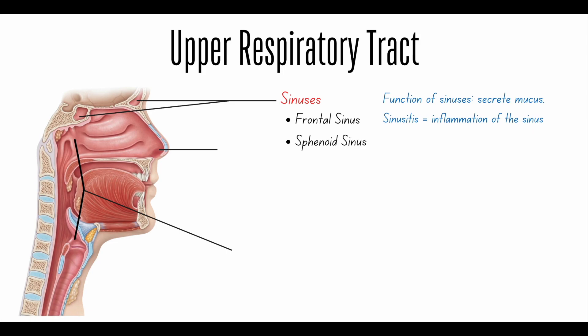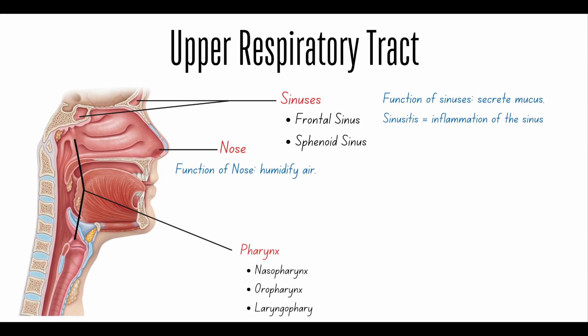The nose is also part of the upper respiratory tract, and its main function is to humidify the air before it reaches the lungs. Finally, we have the pharynx. The pharynx is divided into nasal pharynx, oral pharynx, and laryngopharynx. It's easy to remember which one comes first because nasal means nose, oral means mouth, and laryngo is close to the larynx.